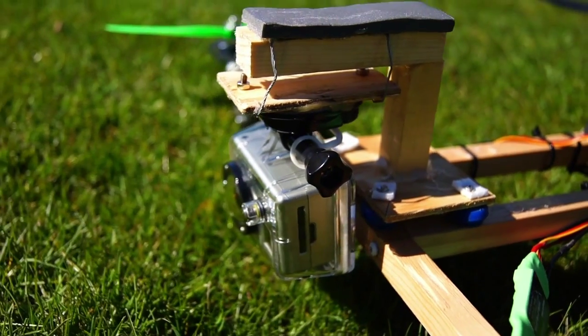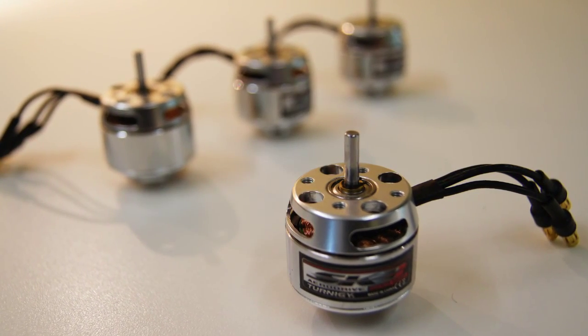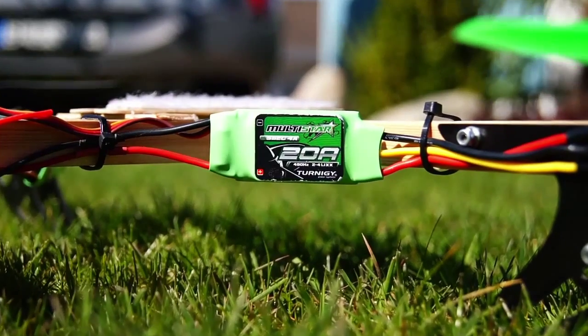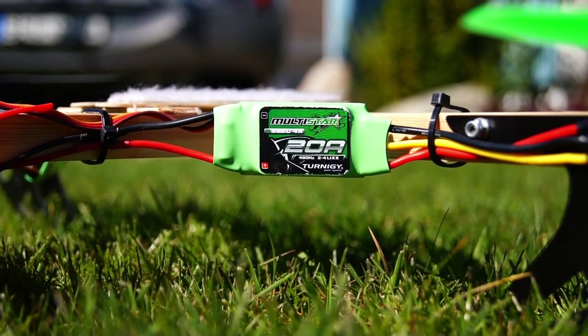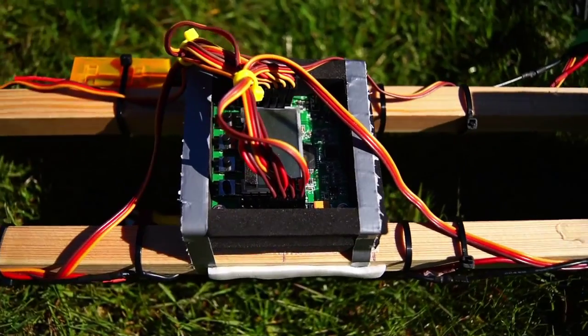For the aerial footage I'm using the GoPro 2, the motors are the Turnigy SK3 from HobbyKing, 20 amp Turnigy Multistar speed controllers, this orange six channel receiver and the new KK 2.1 board.